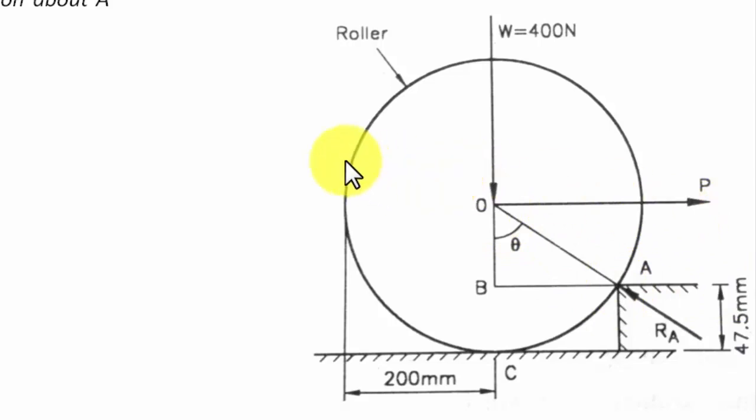This is going to produce a pivoting motion, and when that pivoting motion happens, the point of contact at C breaks. Now if the point of contact at C breaks, then the reaction at C is going to be equal to zero. The only reaction that we have to deal with is this RA. Now this RA makes an angle of theta with the vertical.